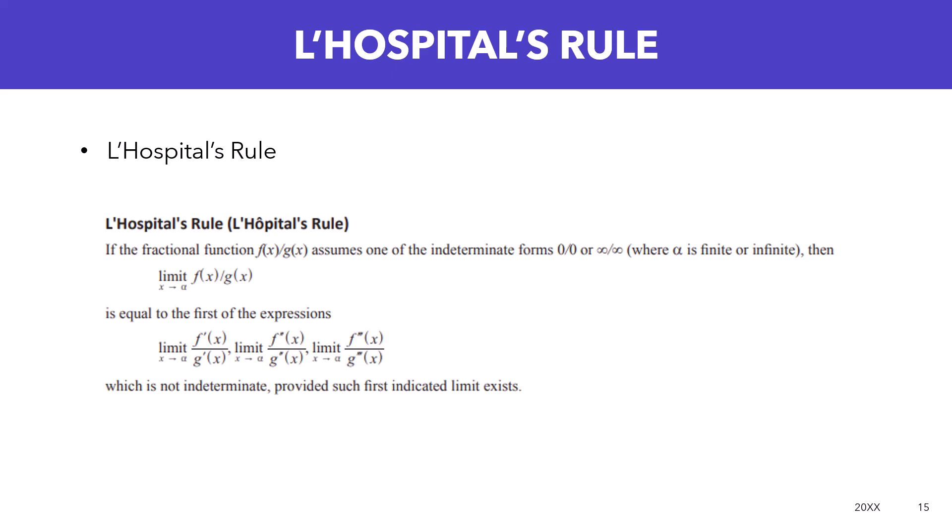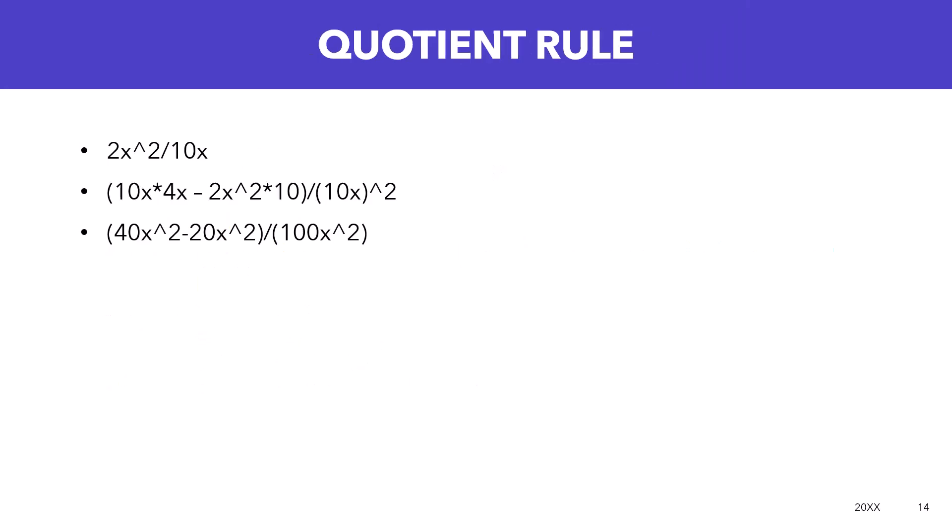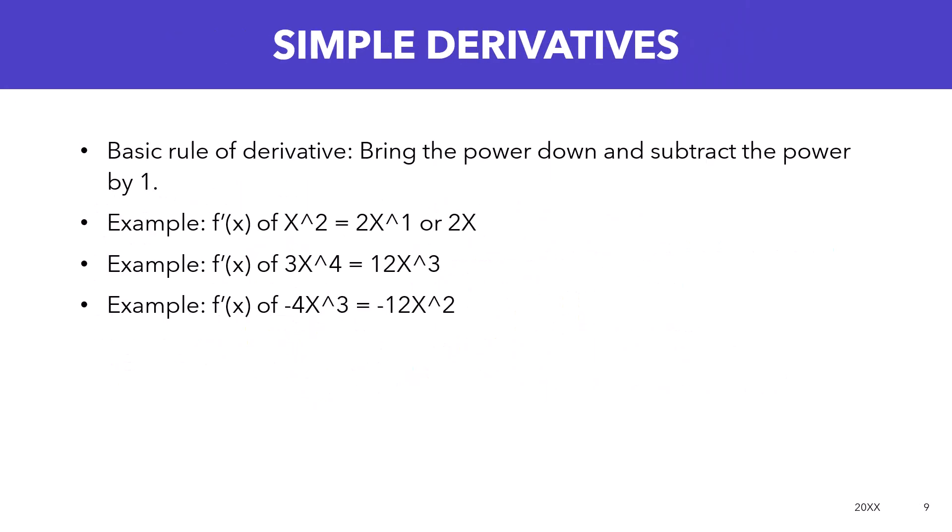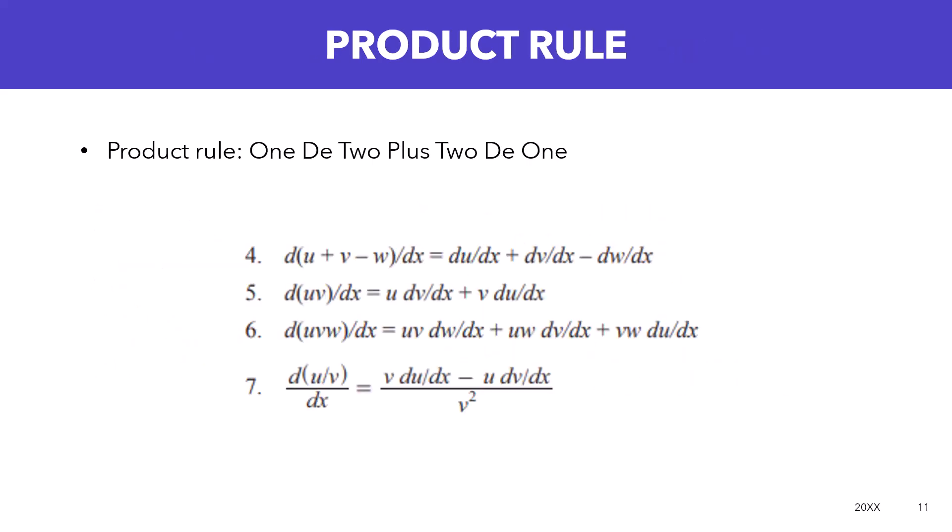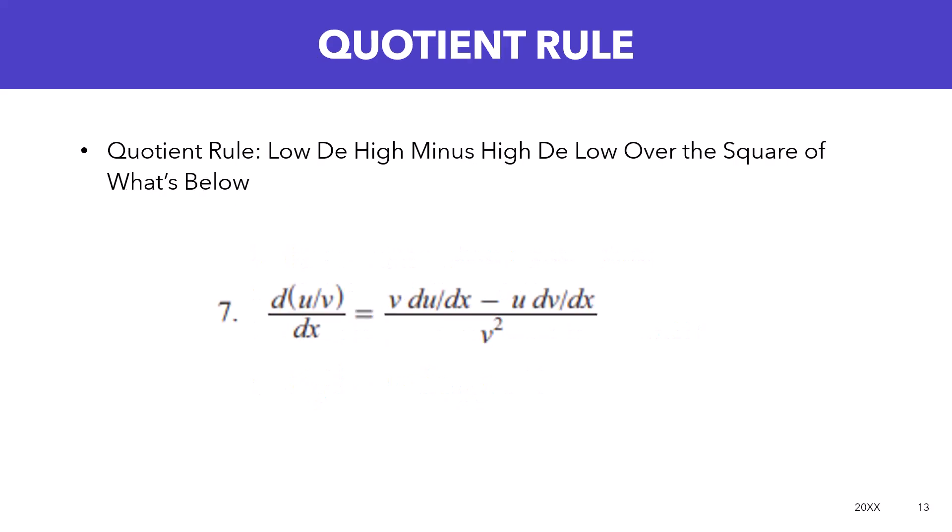So to recap here, you're able to go through simple derivatives, understanding your trigonometric derivatives and memorizing those or referring to them in the FE manual, using the product rule 1d2 plus 2d1, then the quotient rule low d high minus high d low over the square of what's below. These are going to be the derivatives that are going to be found on the FE exam.